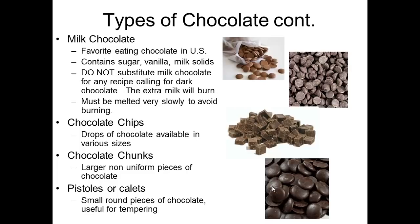The next type of chocolate is milk chocolate. You can see that milk chocolate is going to be a lighter shade of brown, obviously because it contains milk solids. It also contains sugar and vanilla. It's the most popular chocolate in the United States. You do not want to substitute milk chocolate in any recipe calling for dark chocolate, because the milk will cause it to burn. You need to melt milk chocolate very slowly to avoid burning, so you just have to keep an eye on it.